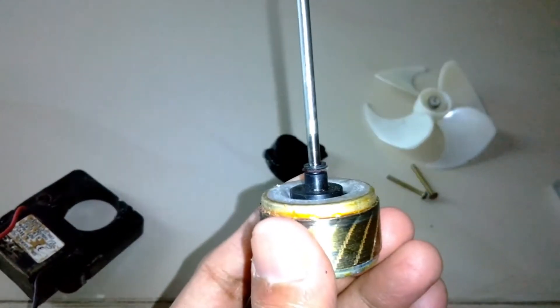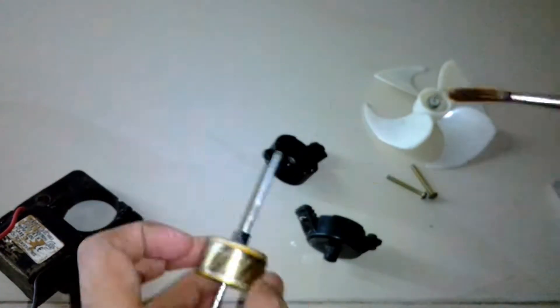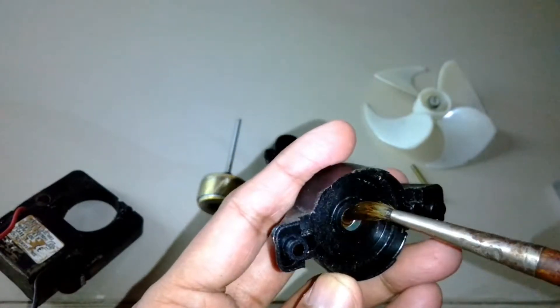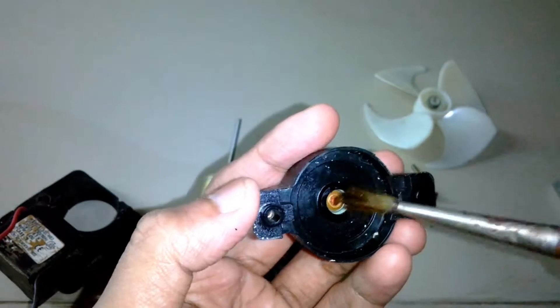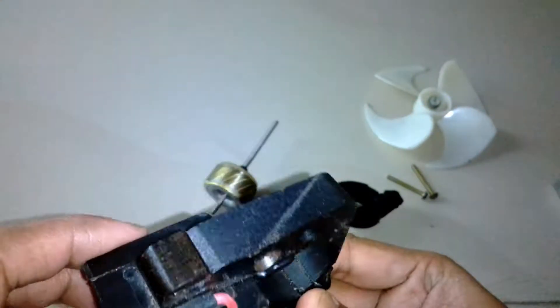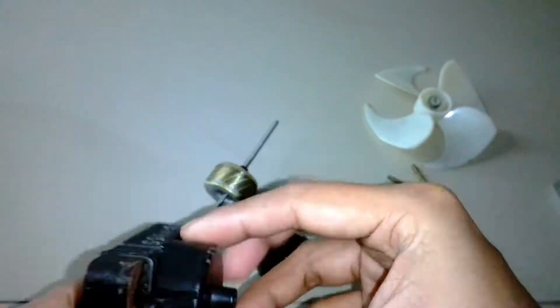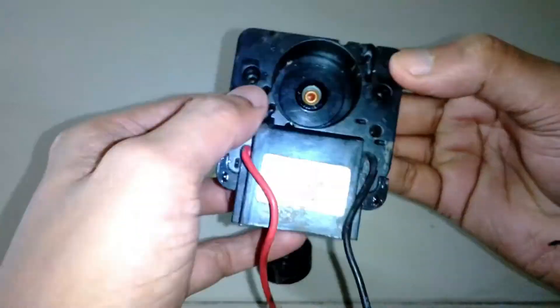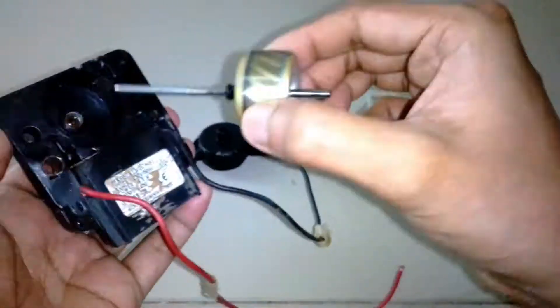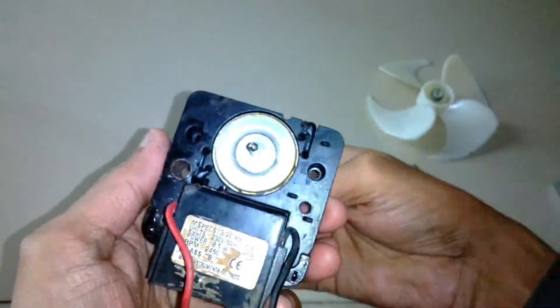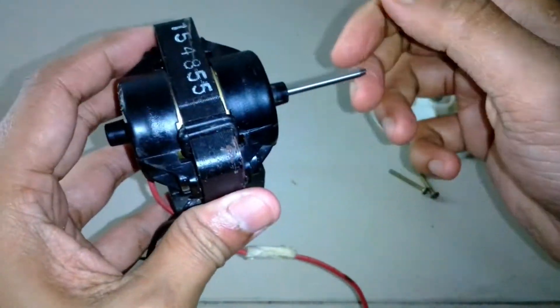Now I'm going to quickly lubricate the shaft and the bushes, after that I'm going to assemble everything back to where it's supposed to be fitted. Maintaining this type of motors is very simple. All you need to do is lubricate the shaft and the bushes and that's it.